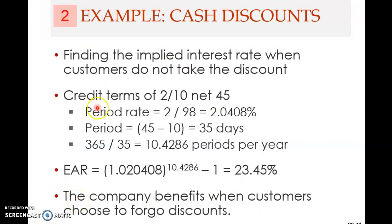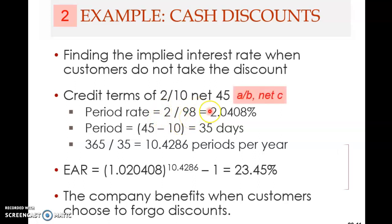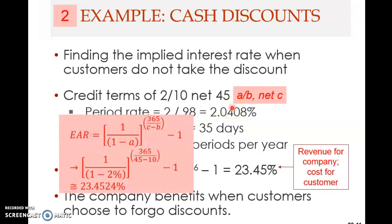Now if we apply this to the example with credit term 2/10 net 45, the period rate is 2 over 98 — remember it is A over (1 minus A). So: (2/98 + 1) raised to the power of 365 divided by (45 minus 10), then minus 1. That gives us 23.45%.